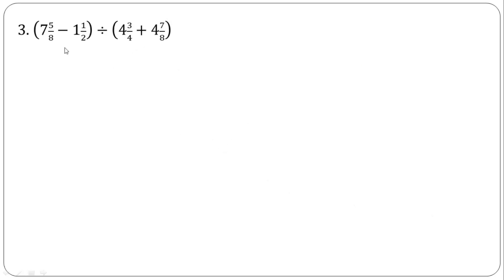The next example is also mixed operations — subtraction, division, and addition — and it contains brackets. What guides everything here is BODMAS: bracket comes first, then division, multiplication, addition, and subtraction. Whichever combination you have, you take them in this order.